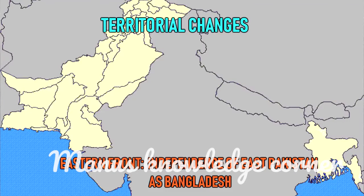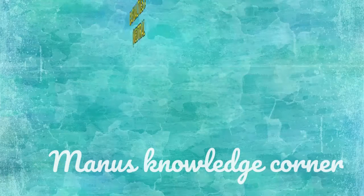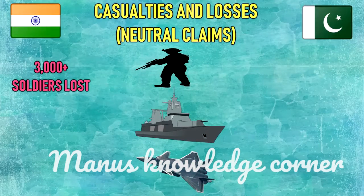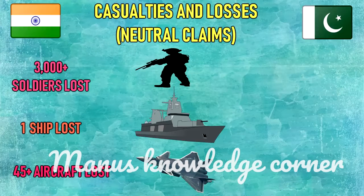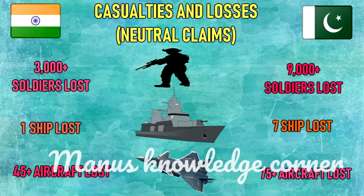Territorial changes — Eastern Front: independence of East Pakistan as Bangladesh. Western Front: Indian forces captured around 5,795 square miles of land in the west but returned it in the 1972 Simla Agreement as a gesture of goodwill. Casualties and losses: India — 3,000 plus soldiers killed, one naval ship lost, 45 aircraft lost; Pakistan — 9,000 plus soldiers killed, 90,000 plus soldiers captured, seven naval ships lost, 75 aircraft lost.